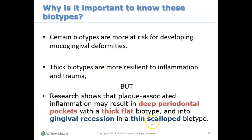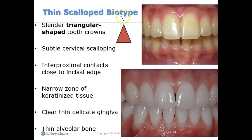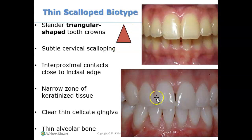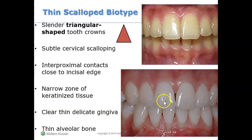When we have a thin scallop biotype, the patient is more prone to inflammation and recession. Here's an example of a thin scallop biotype — the tooth has a more triangular shape. When we see a triangular-shaped tooth, the gums or tissues tend to be a little more thin. They have thin gingiva, which means they're more prone to infection, recession, and inflammation. We do not like the thin scallop biotype.